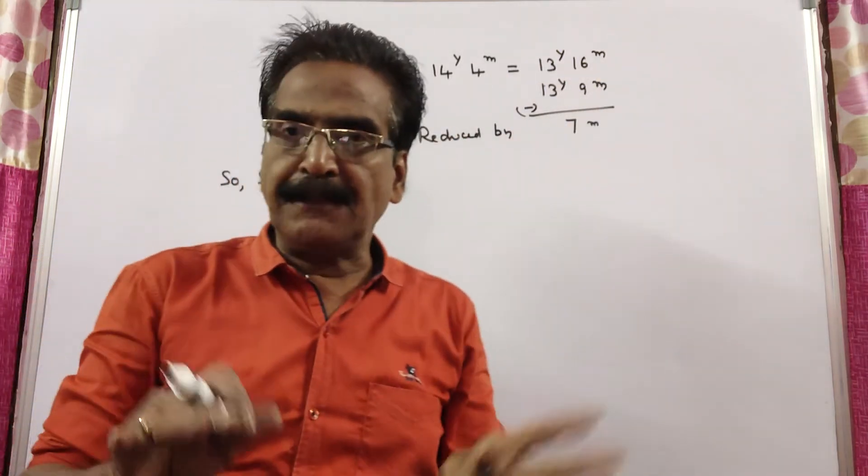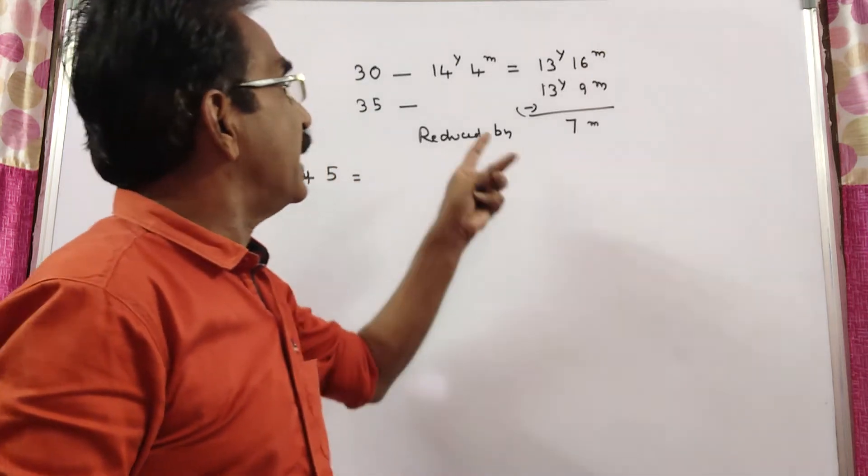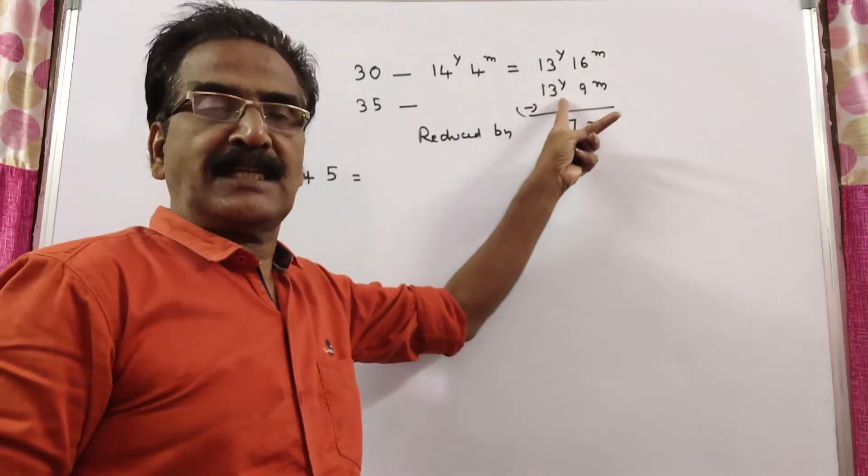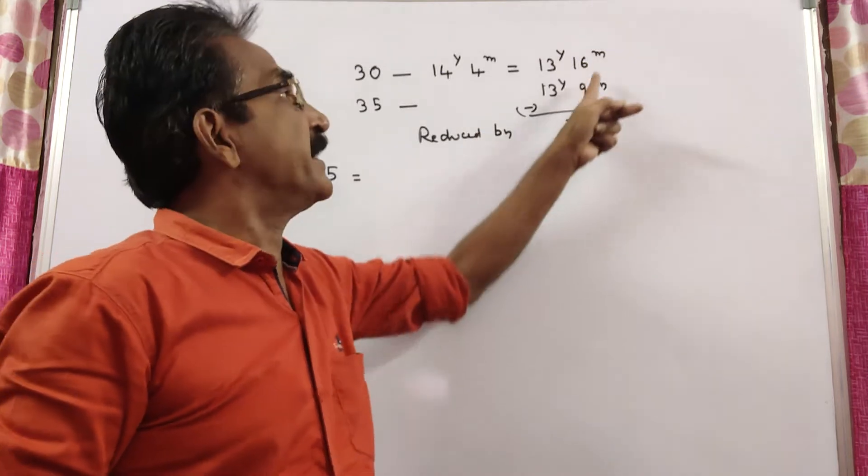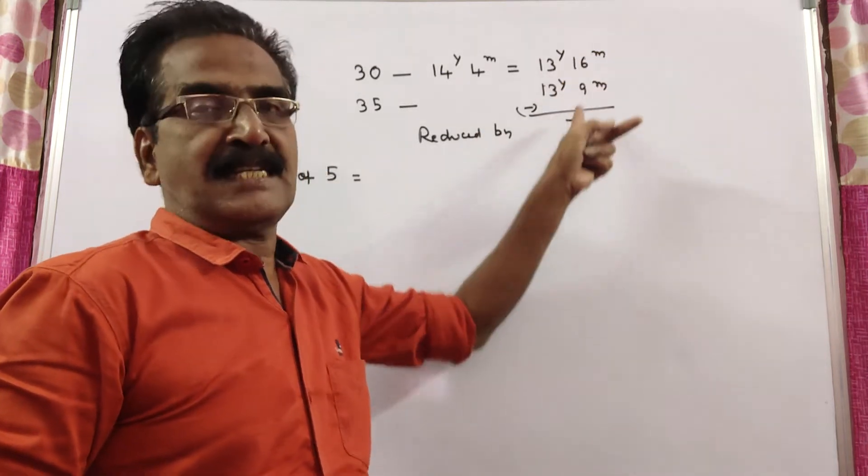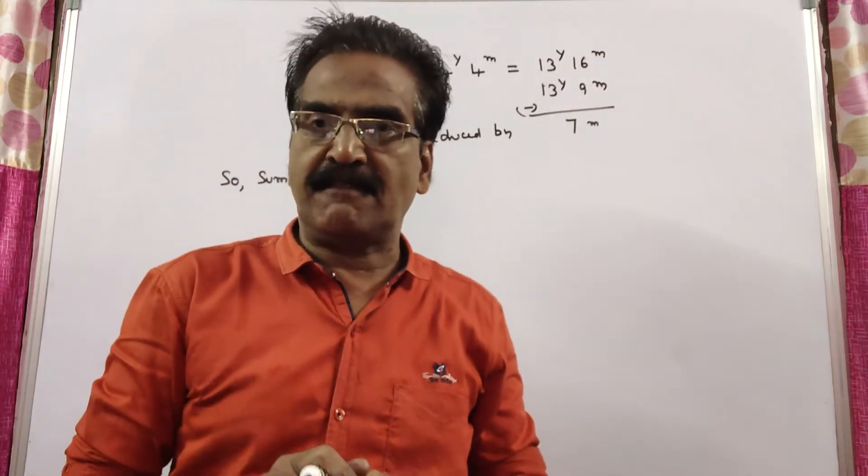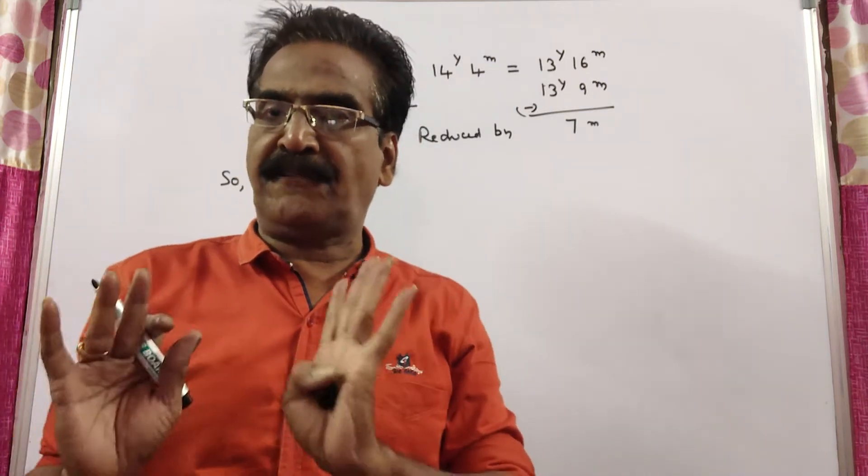And after admission of 5 new students, the average becomes 13 years, 9 months. That means the average is reduced by 7 months. The average is reduced by 7 months on all 35 students.